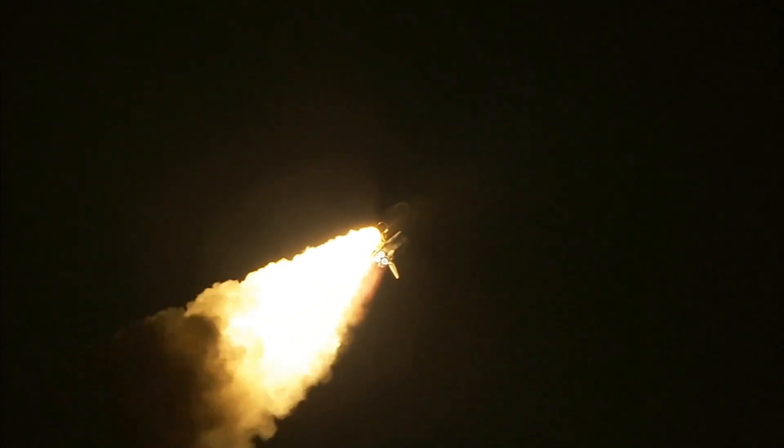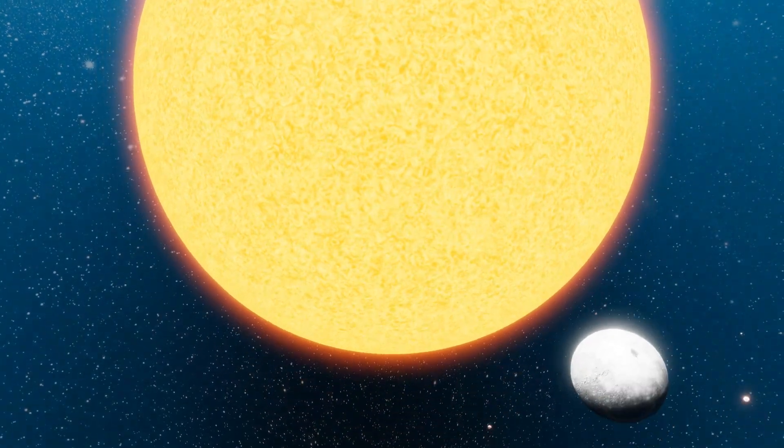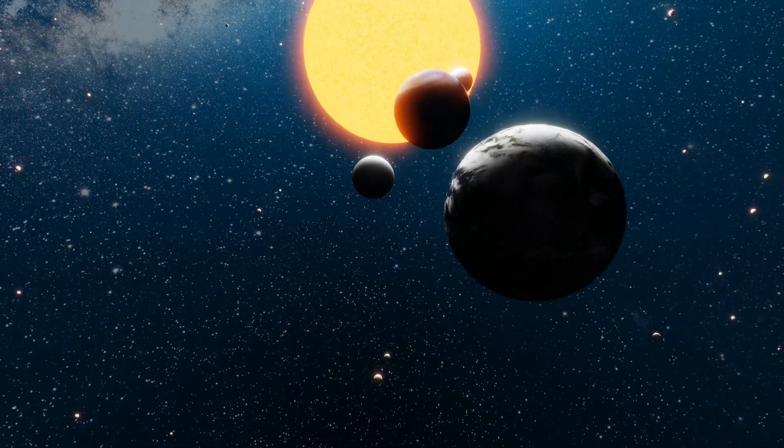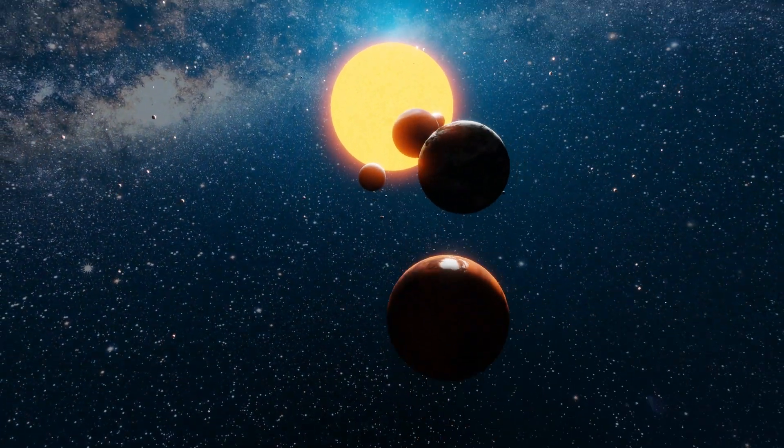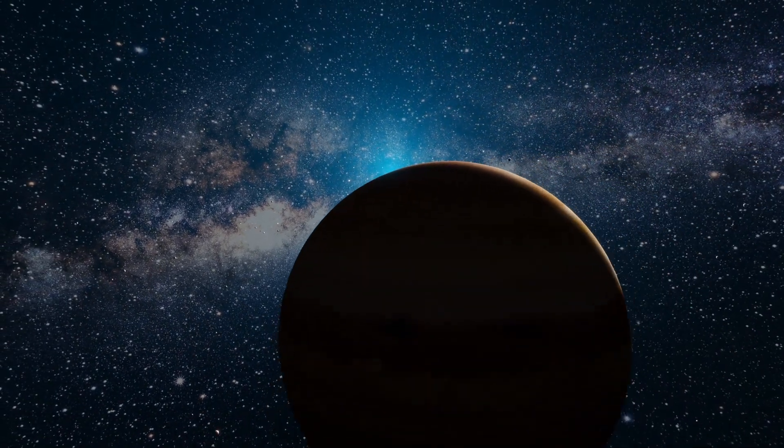Uranus was on Voyager's list of planets to visit because it is an odd world that we still don't know much about. The planet's spin axis is tilted by 98 degrees, meaning it spins on its side, unlike any other planet in our solar system.